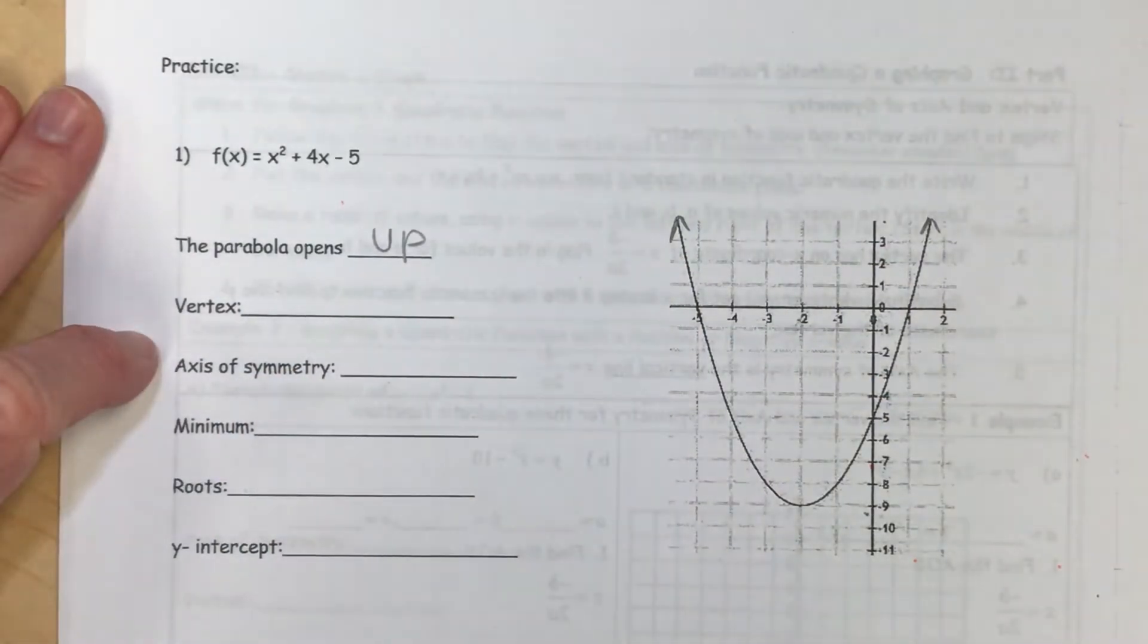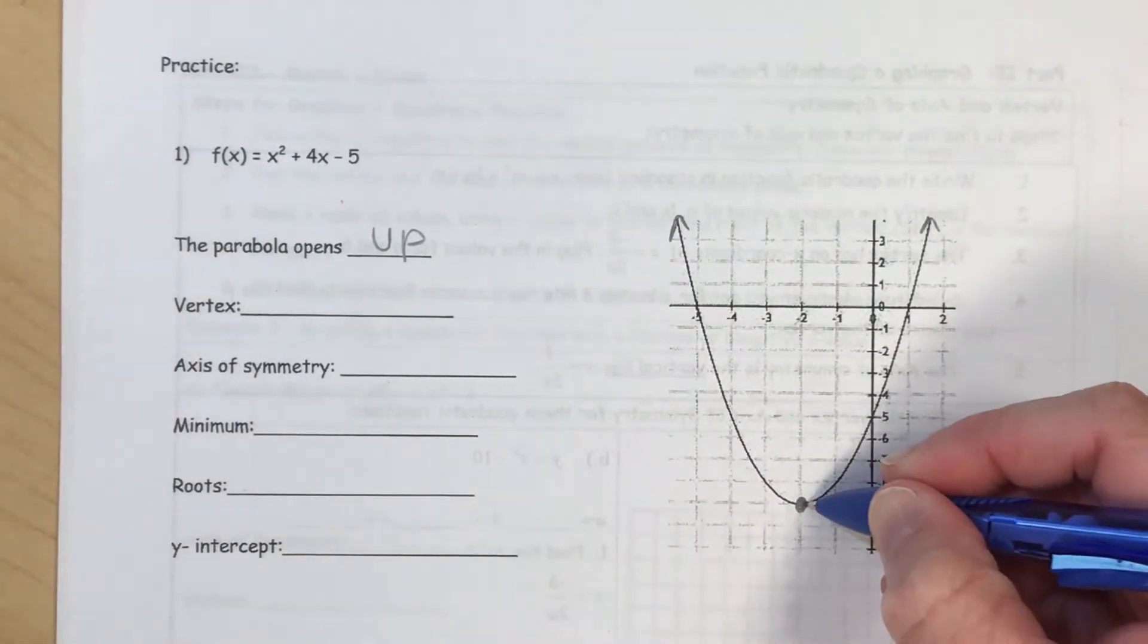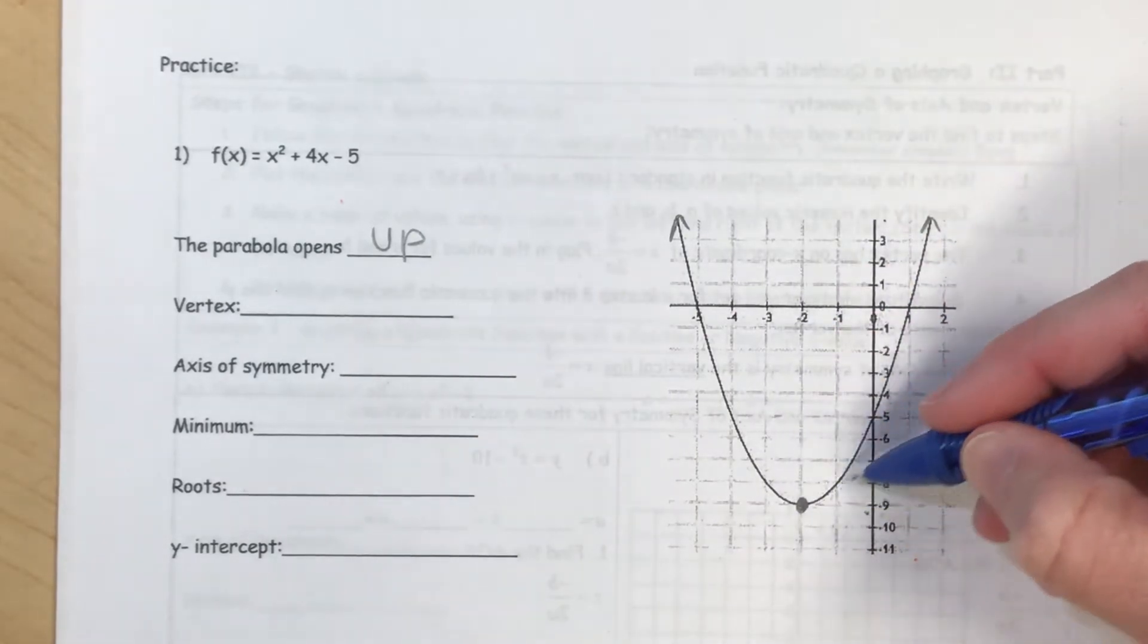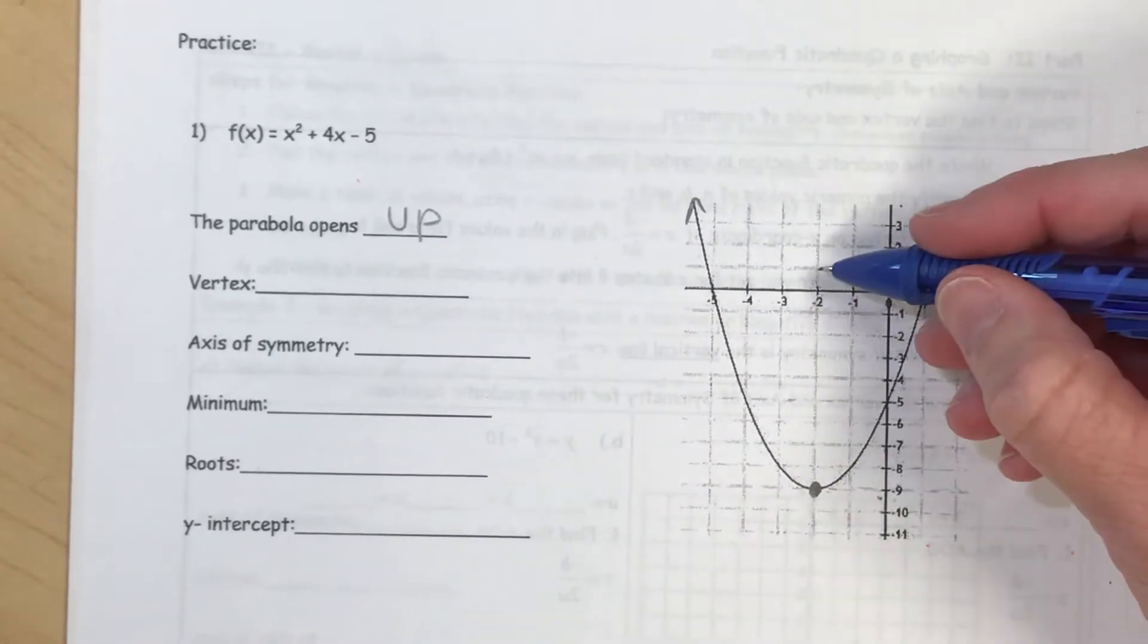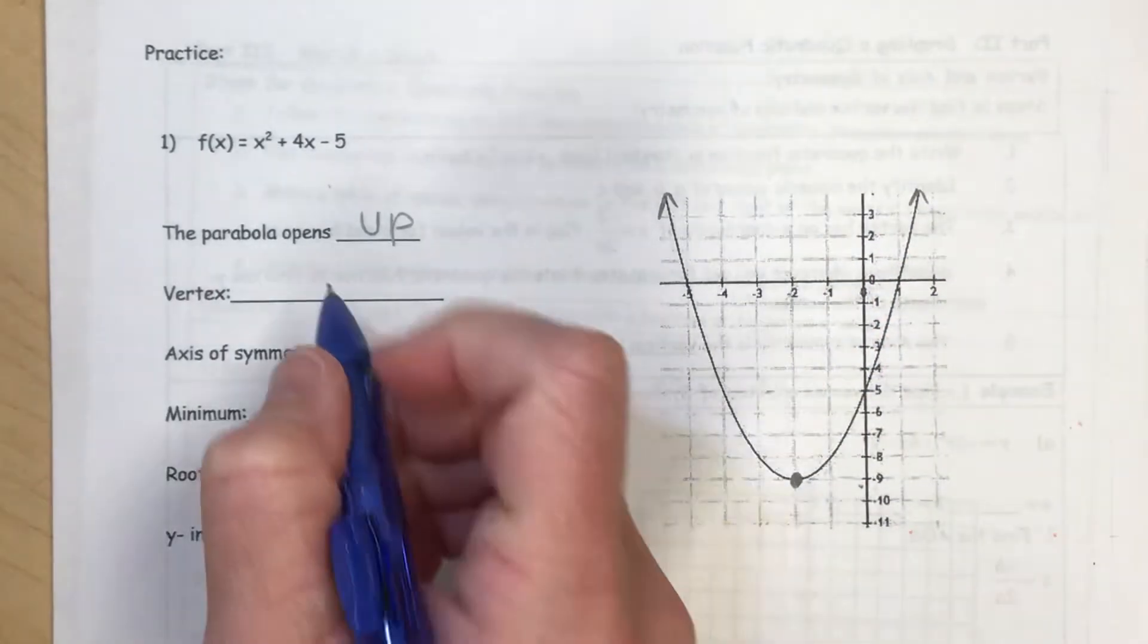And the vertex of our picture, so this is going to be the lowest point of that parabola. So that point where it stops going down and it turns around and goes back up. Let's label this point. It looks like it tracks at negative 2, negative 9.